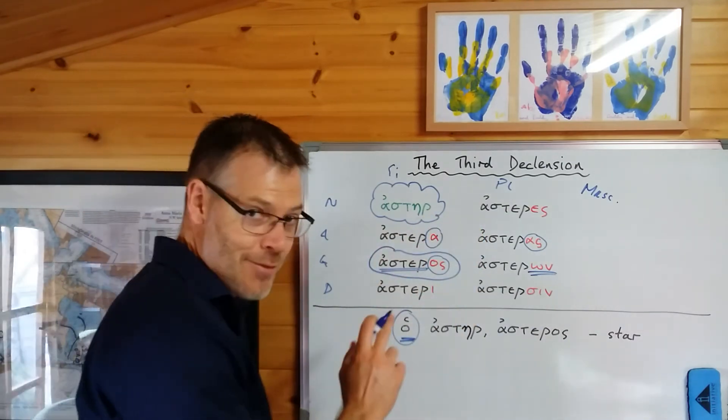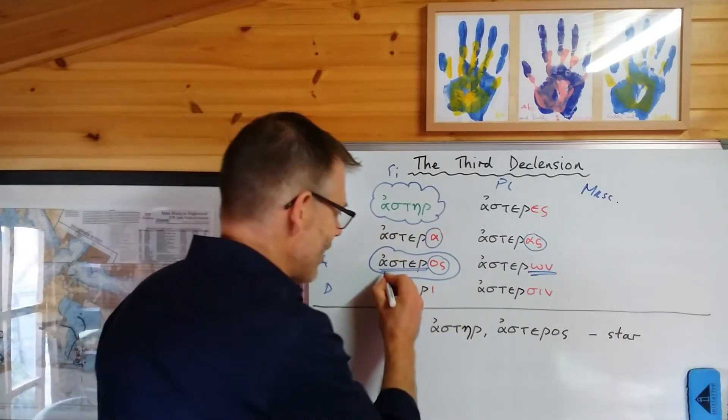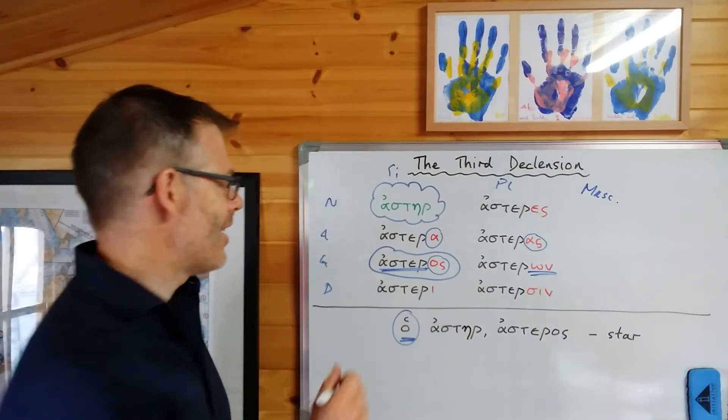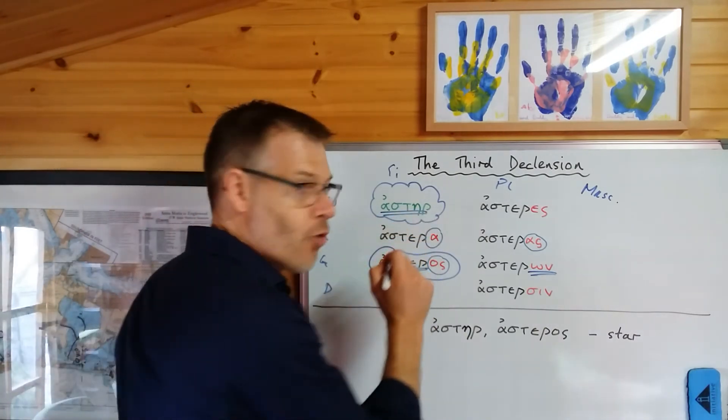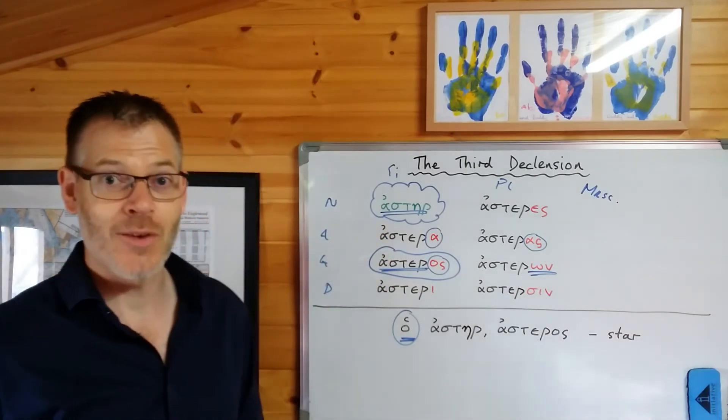You could have picked any others, but grammarians choose the genitive singular, so let's do what everybody else does. So you have to learn, if you want to learn this noun, you have to learn asteros. That gives you the stem. And separately, you have to learn the nominative form because just learning the stem won't give you the nominative.